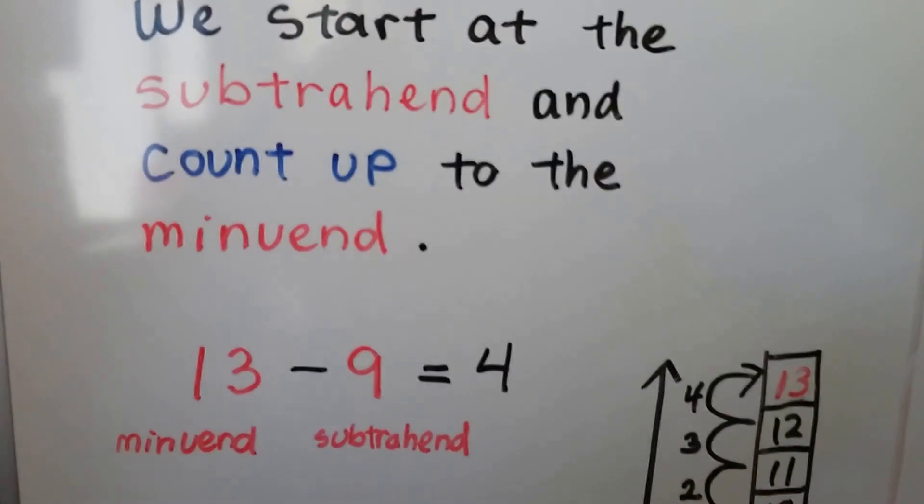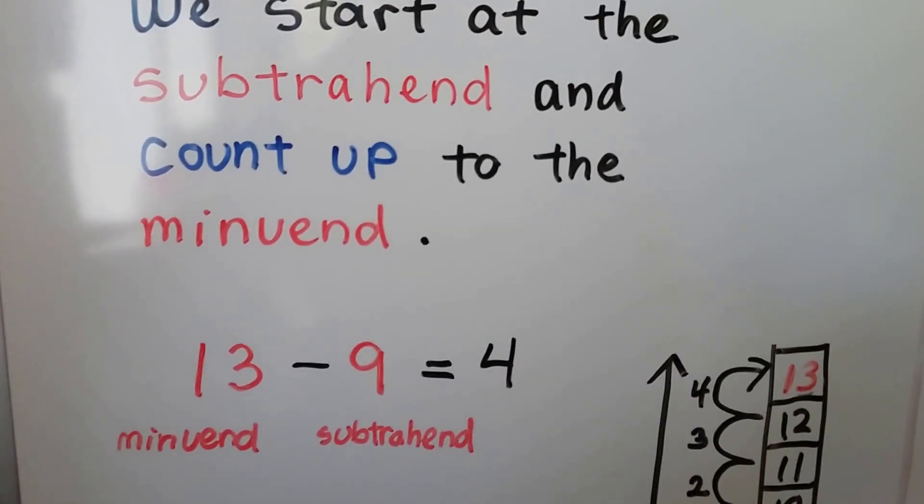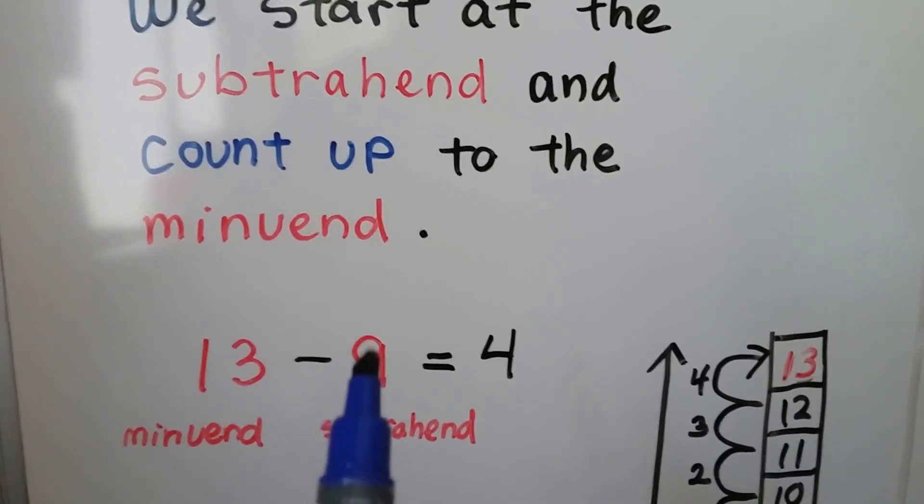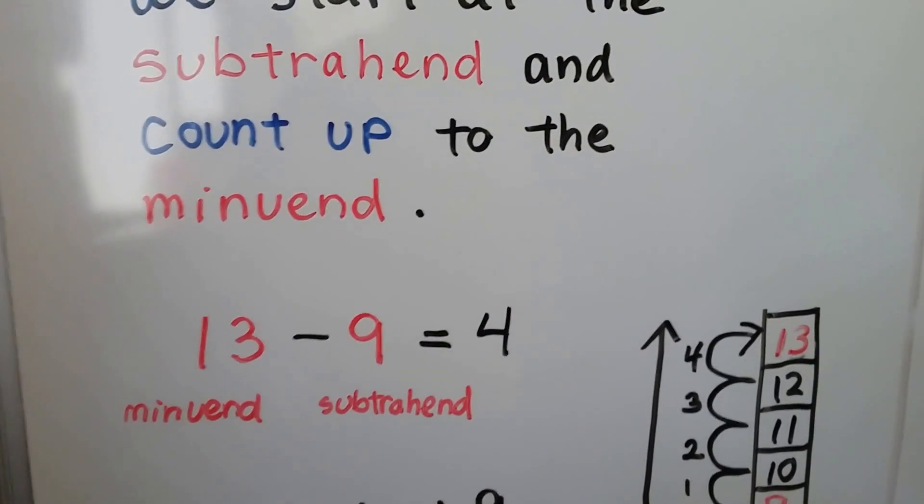Remember, the first number in subtraction is the minuend and the second one is the subtrahend. We start with the subtrahend and count up to the minuend.